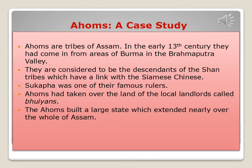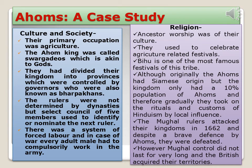Now let us study the case study of the Ahoms. Ahoms are tribes of Assam. In the early 13th century, they came from areas of Burma into the Brahmaputra valley. They are considered descendants of the Shan tribes, who have links with the Siamese and Chinese. Sukhappa was one of their famous rulers. The Ahoms took over land from local landlords called Bahuans and built a large state that extended over nearly the whole of Assam.